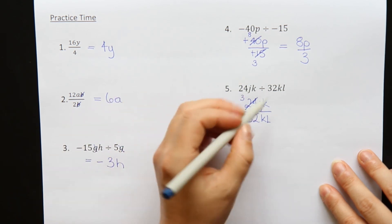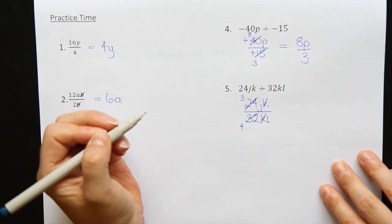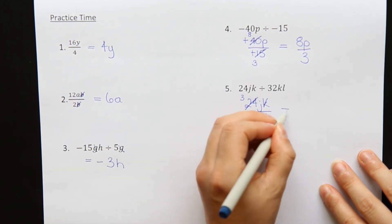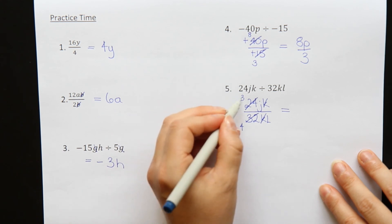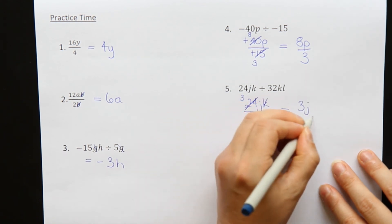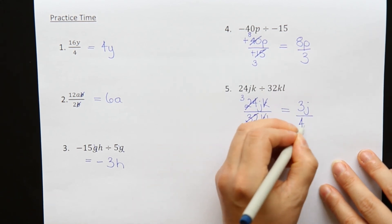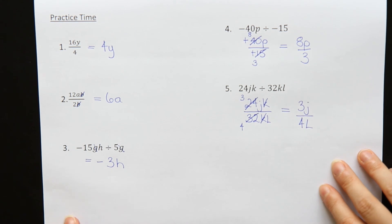Now looking at the letters. I have a K on the top and a K on the bottom. And they will cancel out. And all I have to do is write down what's left. On the top 3 and J are left. And on the bottom I have a 4 and an L. And there it is. The answer.